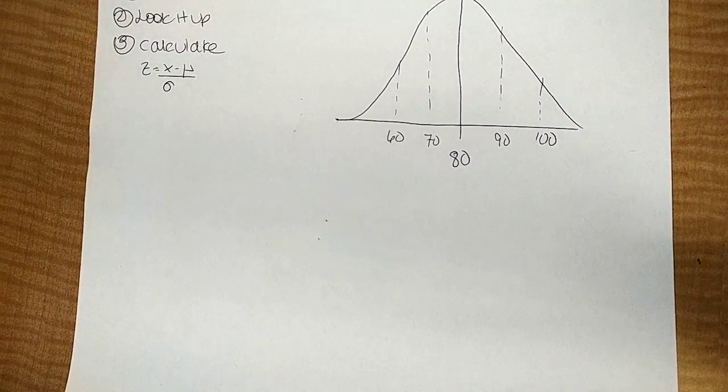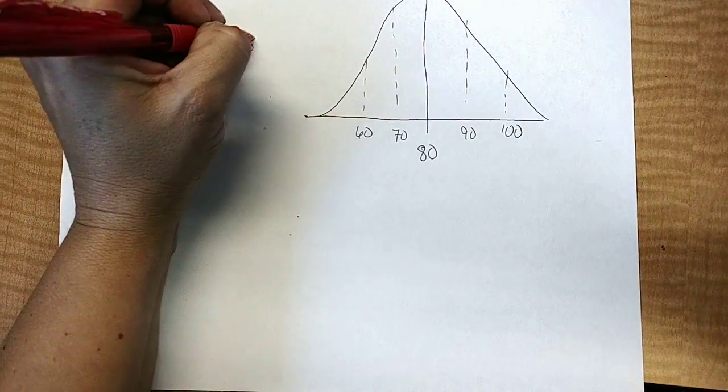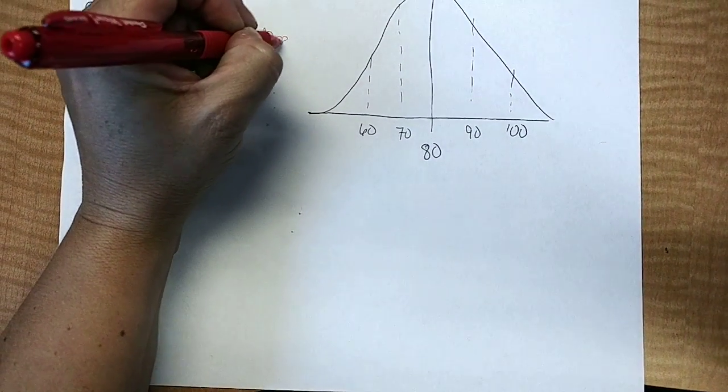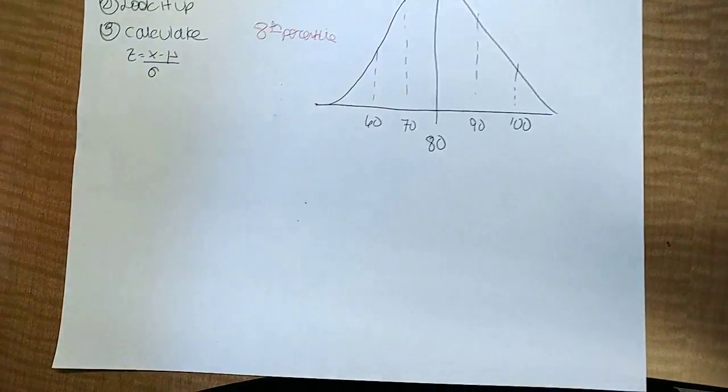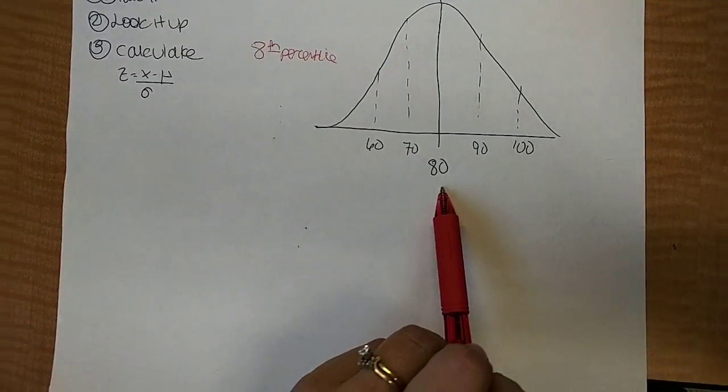My question had been, let's say that someone told you that they were in the 8th percentile, and you want to figure out what their score was. So we can pretend these are exam scores with a mean of 80 and a standard deviation of 10.